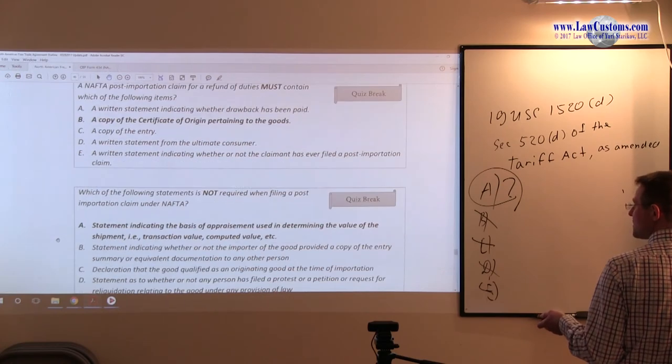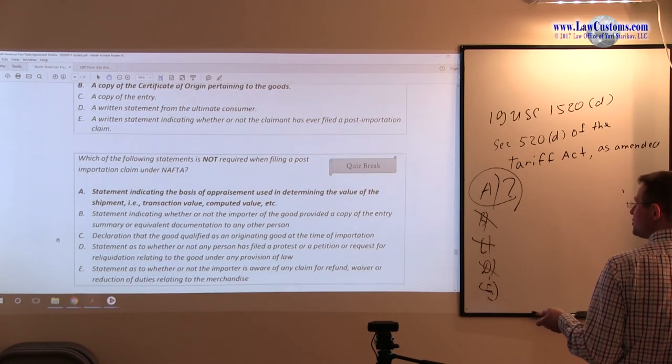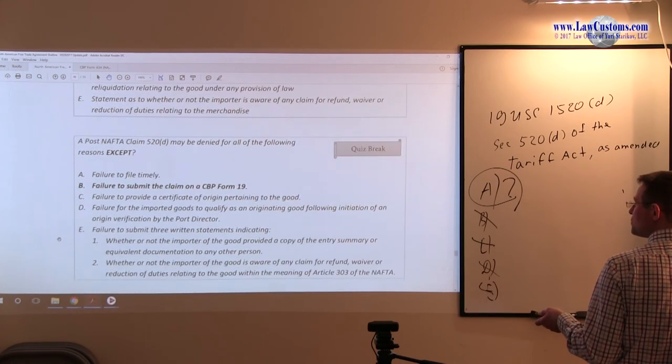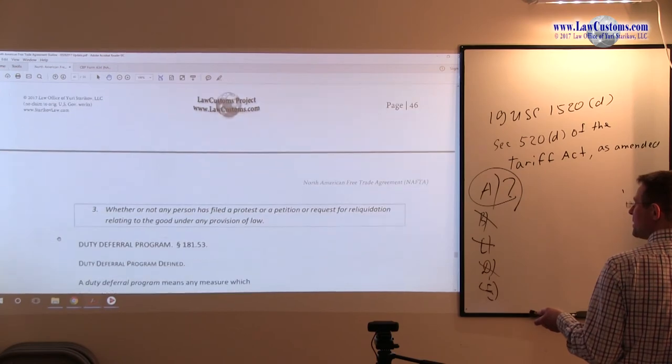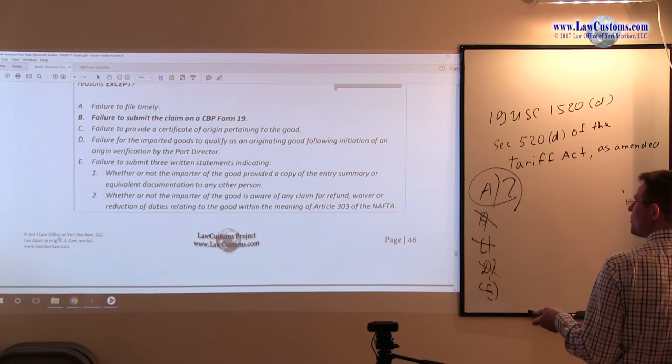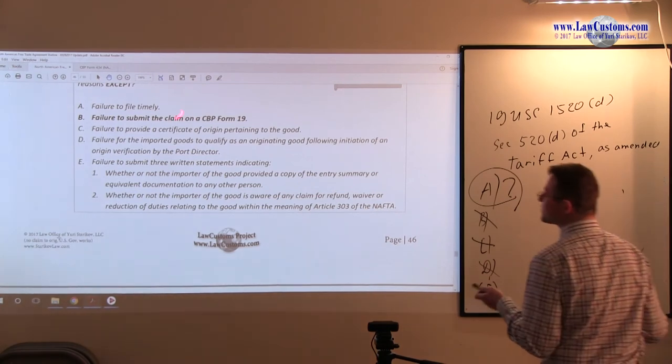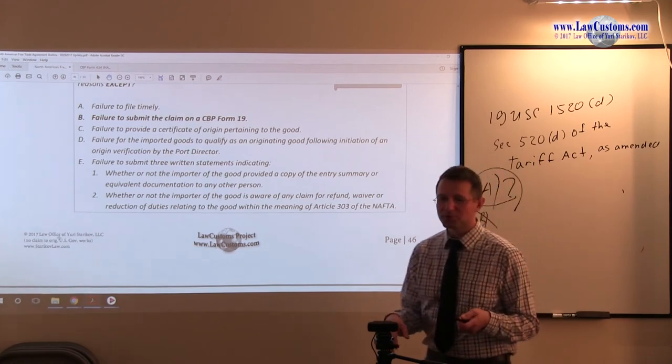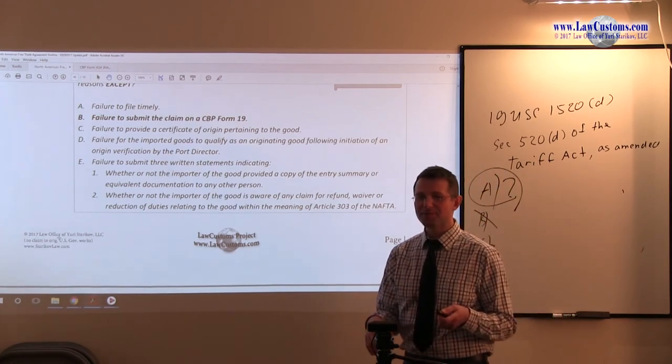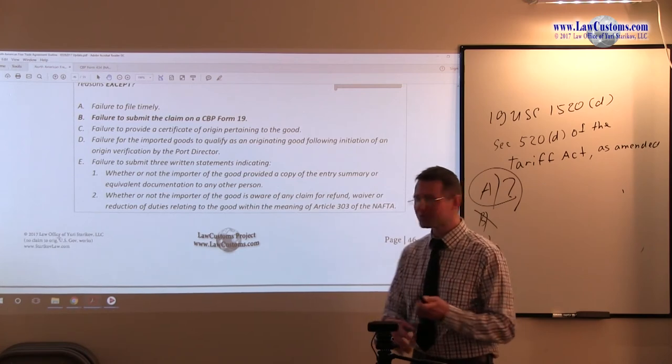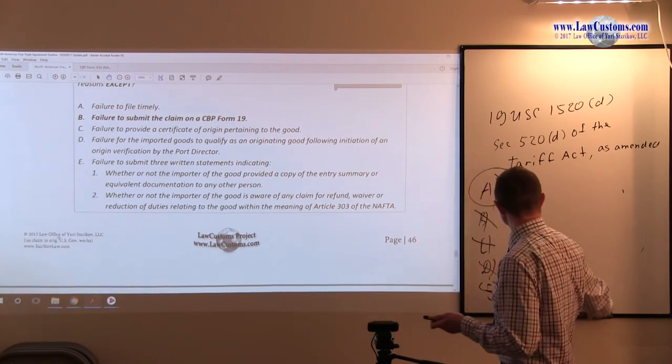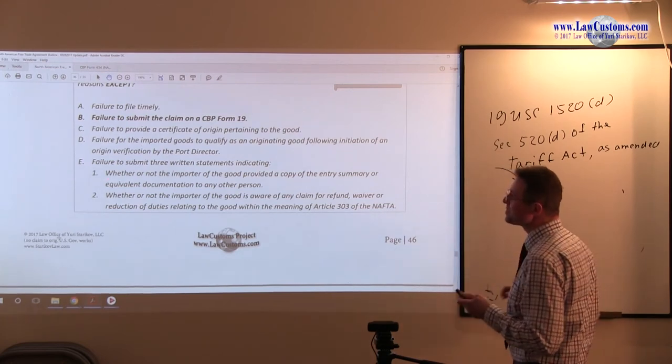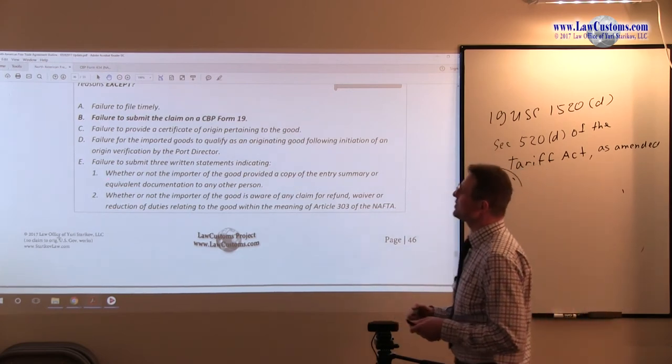CBP Form 19 is not required. And of course, if you file something on CBP Form 19, you are indicating you are making not a 1520D claim, but 1514 claim. So submitting it may cause problems, not a failure to submit it. So it is better not to submit it. So in this case, I think B fits the bill. So B is the correct answer choice. Let's take a look at the other ones.